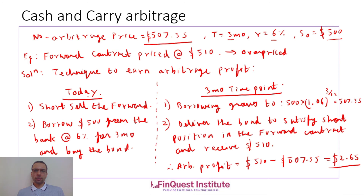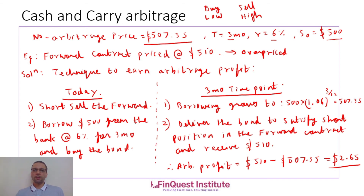Let us focus on the actions to be done today to capture this arbitrage profit. Whenever capturing arbitrage, always remember: buy low and sell high. Step 1: we short the forward contract because it is overpriced — we are selling high. Step 2: we borrow $500 from the bank at 6 percent for 3 months and purchase the underlying bond — we are going long the bond, i.e., buying low. That is all we do today; we then do nothing and wait for the 3-month time point.